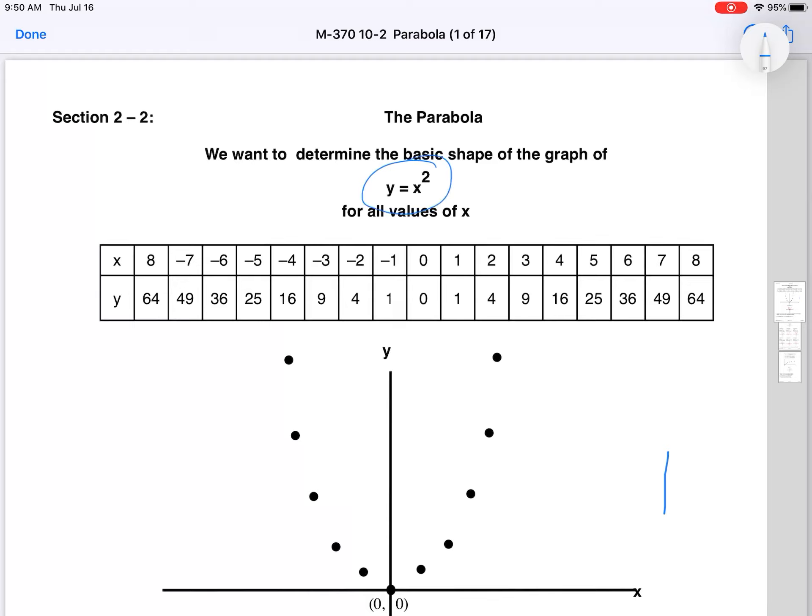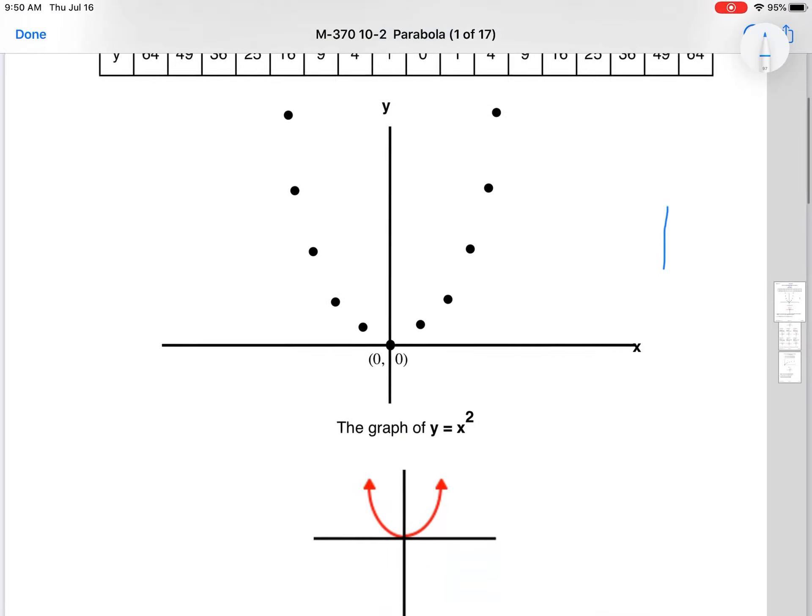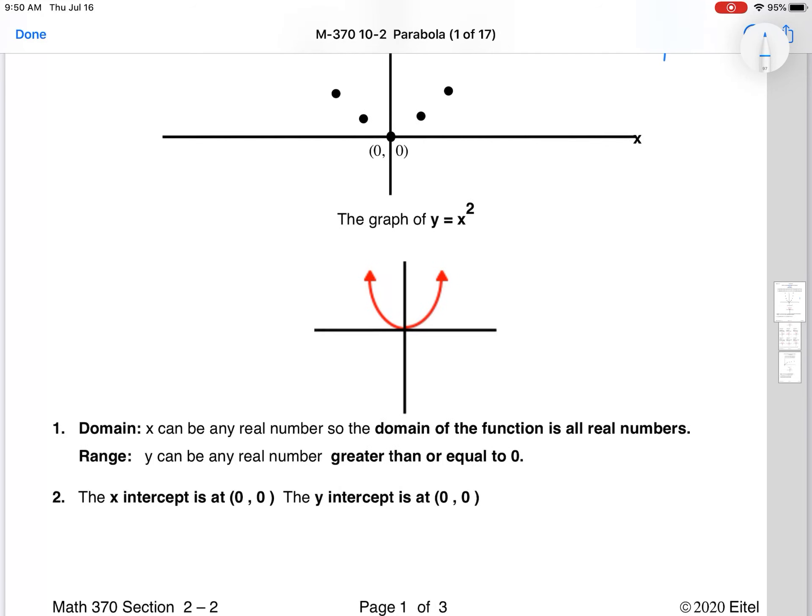That's our basic graph and everything is going to be a shift from this. The big thing that we're going to want to be able to do is identify the vertex and the shape of a parabola based upon an equation. A parabola is a conic section, gotten by slicing a three-dimensional cone. So there's the graph of x squared that you know.